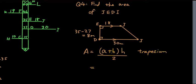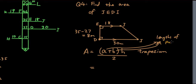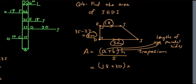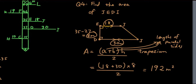A and B are the lengths of the parallel sides. You can see that 18 and 30 are parallel, so a plus b is 18 plus 30, times the perpendicular height of 8, divided by 2. Putting that into the calculator gives 192 square meters — that is the area of JEDI.